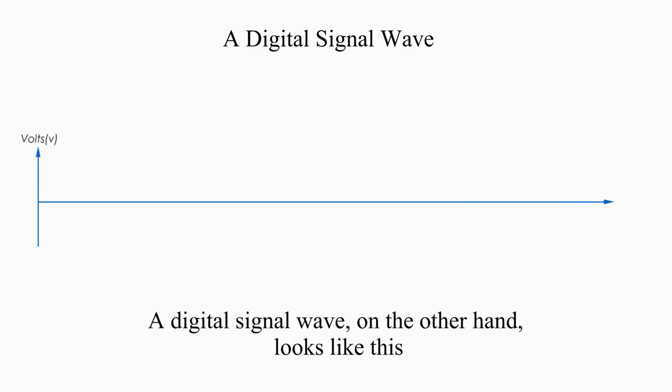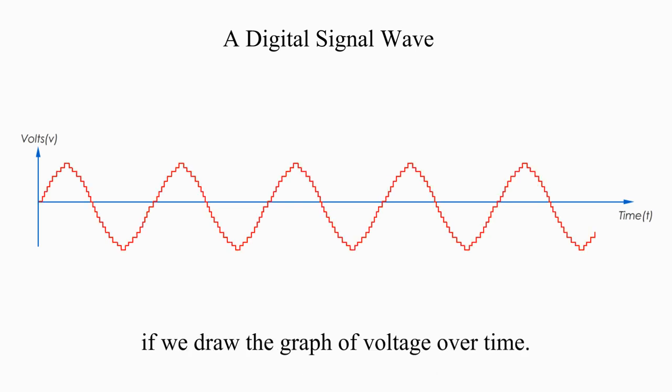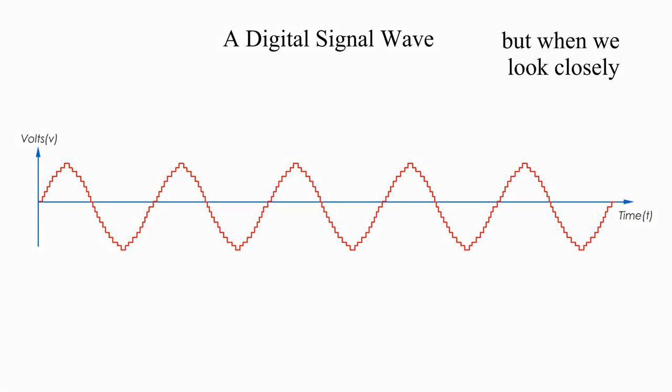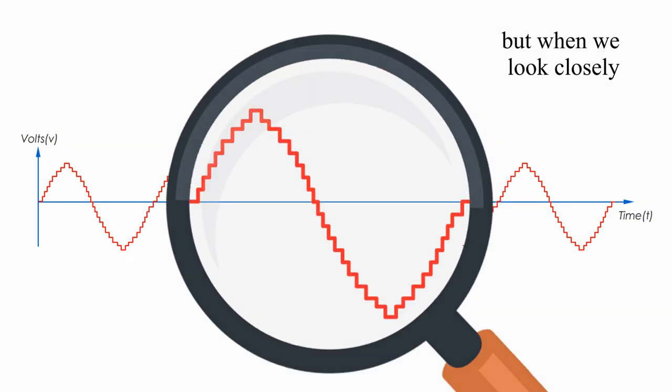A digital signal wave, on the other hand, looks like this if we draw the graph of voltage over time. Viewed from afar, the digital signal wave may look smooth and continuous, but when we look closely, there are tiny discrete steps.